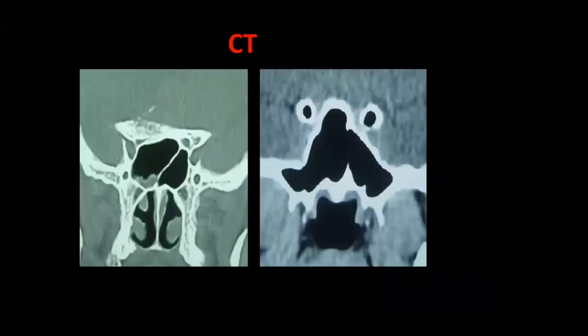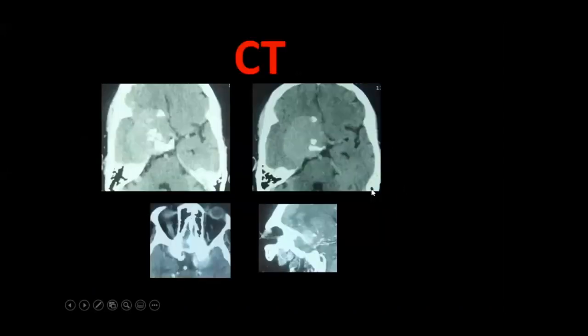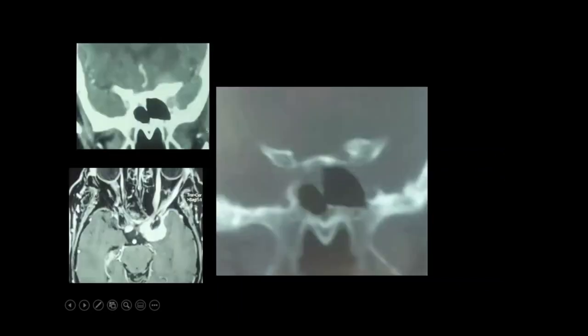Let me show you images of my cases. CT is very important — look at how important it is to show enlargement of the anterior clinoid and how the optic nerve is completely compressed here. Various anterior clinoid processes in various cases. I always insist on having CT for general and specific information about the anterior clinoid process.